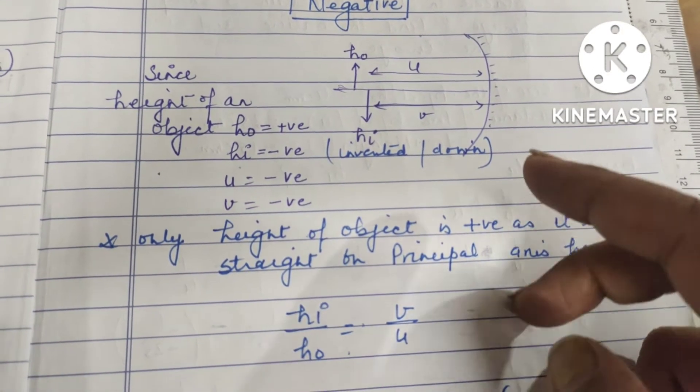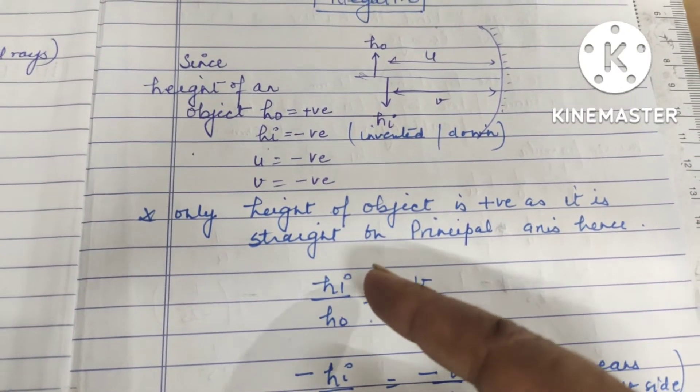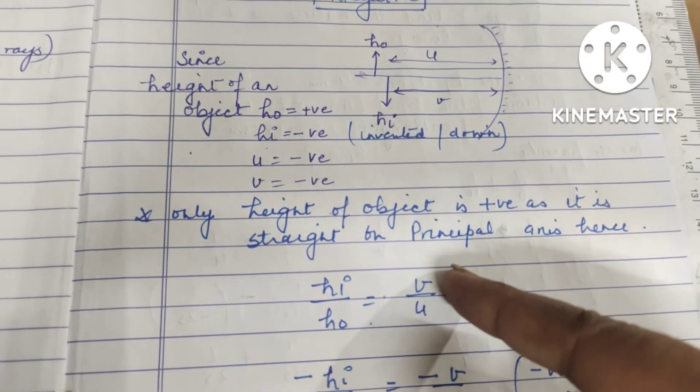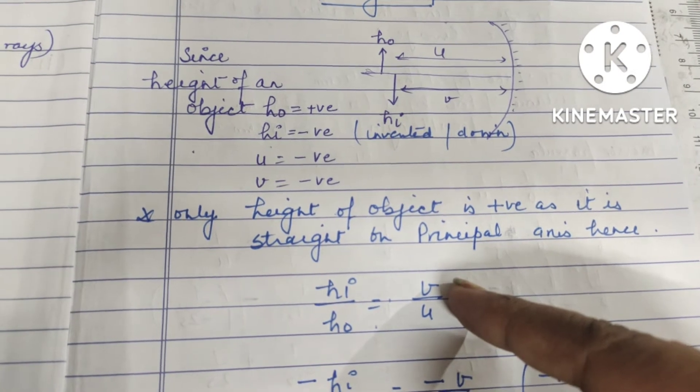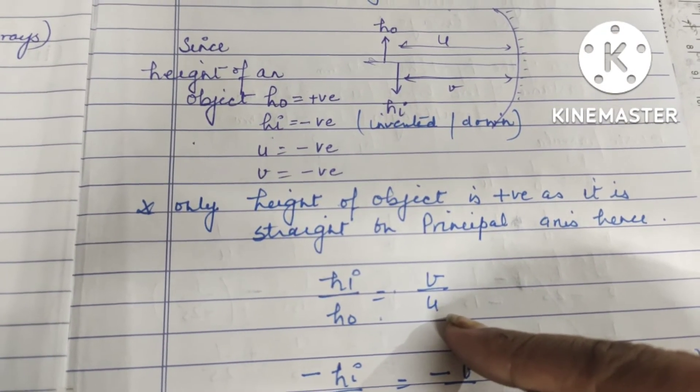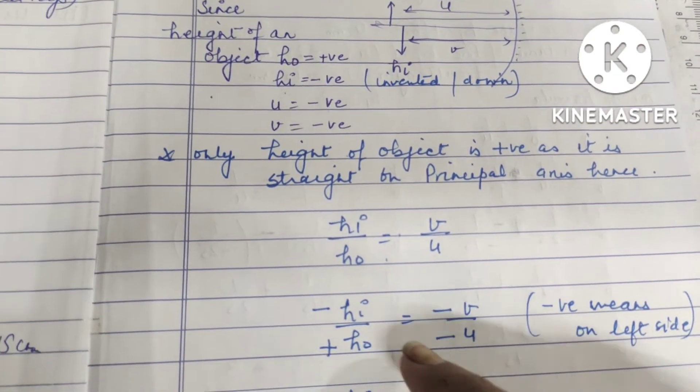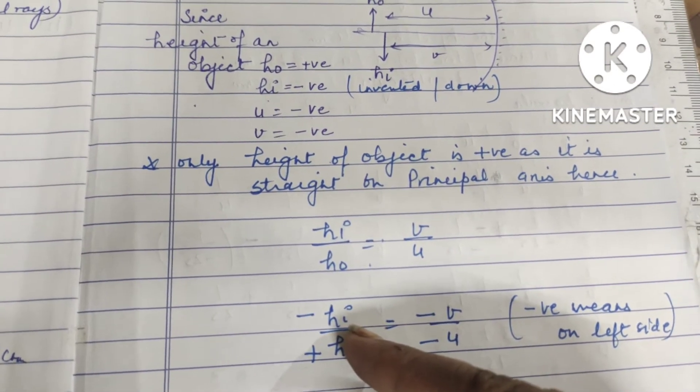So let's write the magnification formula. The height of the image upon height of the object equals v upon u. Why v upon u? Because v indicates the distance of an image, whereas u indicates the distance of an object from the mirror.